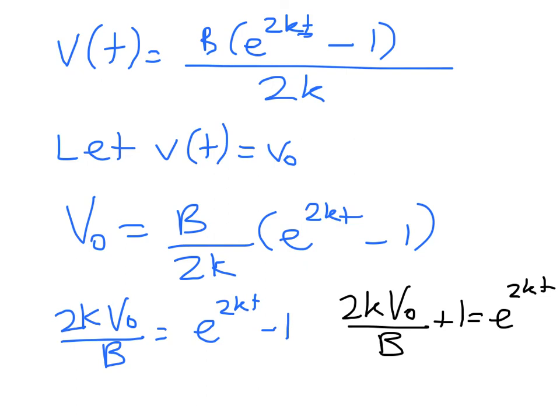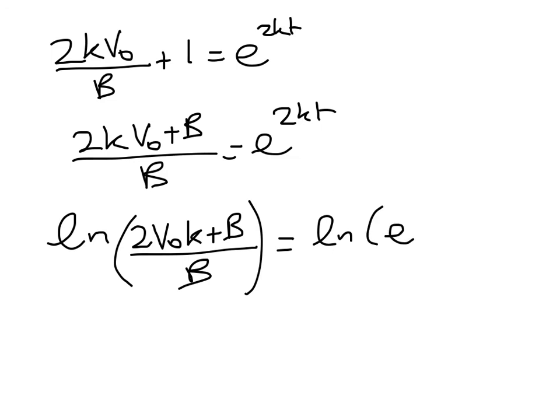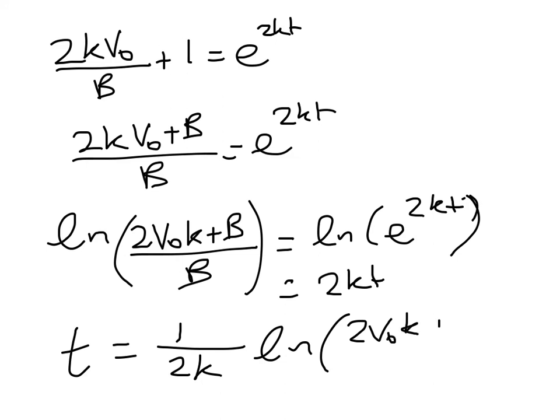We need to get that t down from the exponent, so we're taking logs. We have (2kv₀ + B)/B = e^(2kt). Taking logs of both sides, ln((2v₀k + B)/B) = 2kt. So t = (1/2k)ln((2v₀k + B)/B) as required.